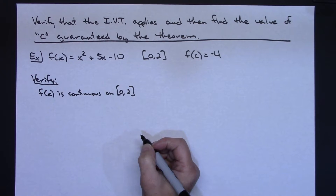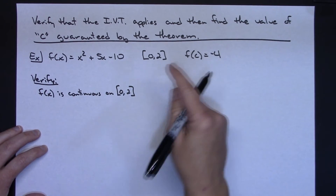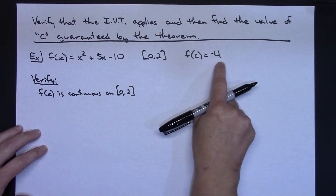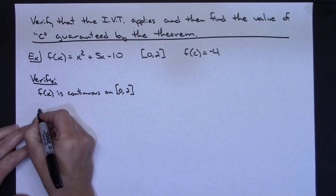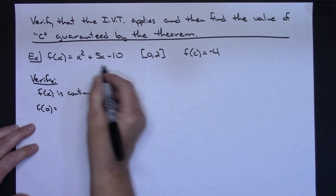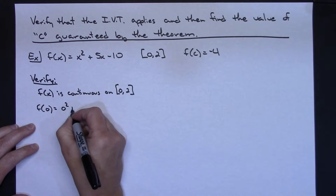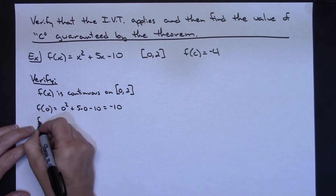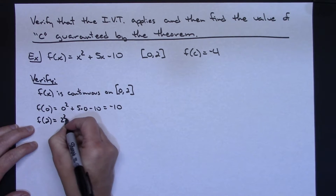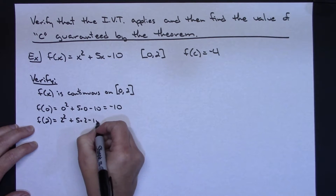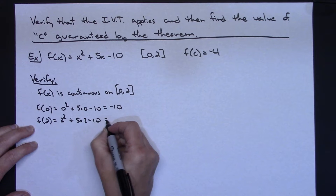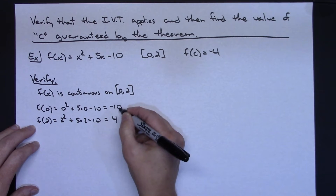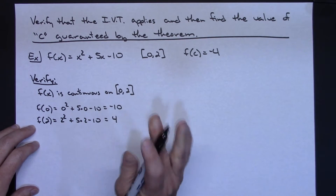Next I need to check my F of A and F of B values to determine whether K falls in between them. So I'll check F of 0: that's 0 squared plus 5 times 0 minus 10, which gives me negative 10. Now F of 2: that's 2 squared plus 5 times 2 minus 10, which is 4 plus 10 minus 10, giving me a value of 4. My K value is negative 4, and negative 4 falls in between negative 10 and 4.